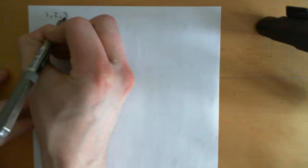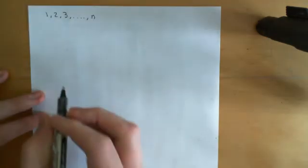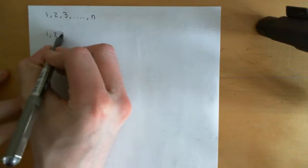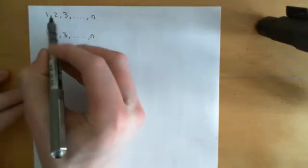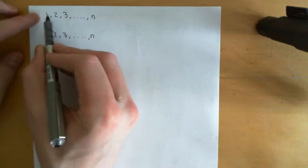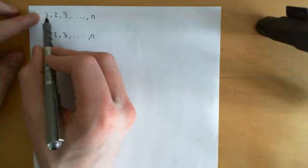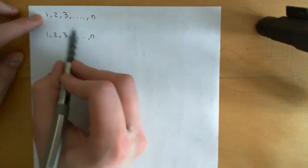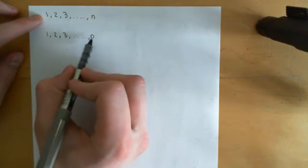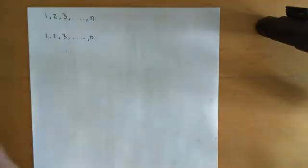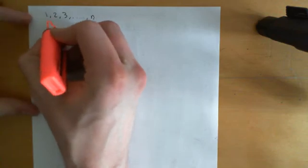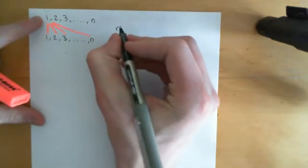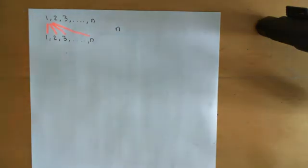If we put our set here — 1, 2, 3, all the way up to n — let's think about how many different set permutations there are. If we start off with the element 1, how many different things can we map element 1 onto? Well, we can map it onto 1, 2, 3, or any one of the numbers all the way up to n. So there are n choices for where we send 1 in our set permutation.